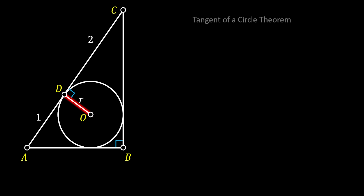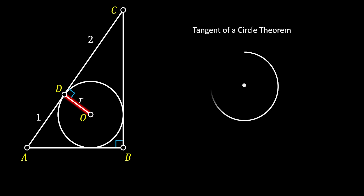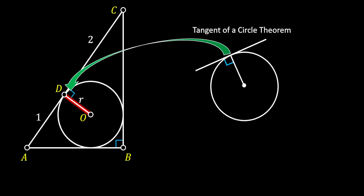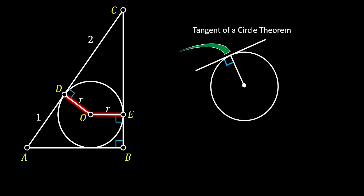We know that the angle at point D is a right angle. We know this by using the tangent of a circle theorem, which states that if we have a circle and a tangent to this circle and we pull the radius to the point of tangency, this radius will always be perpendicular to the tangent line. So we're going to use this since the hypotenuse AC is the tangent to our circle. Now let's rotate our radius horizontally to the right and label the intersection point as E.